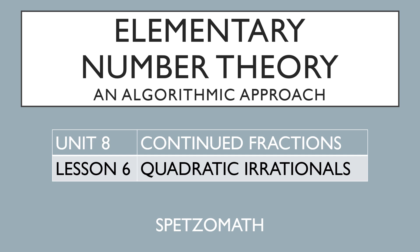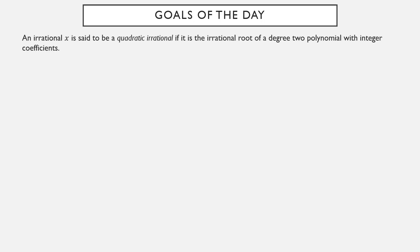We're going to discuss quadratic irrational numbers and what they have to do with continued fractions. Let's go over our goals and some definitions. An irrational number x is called a quadratic irrational number if it's irrational and it's the root of a degree 2 polynomial — a quadratic — with integer coefficients.